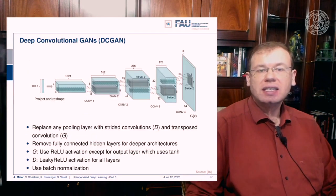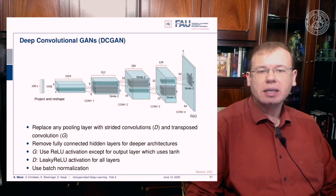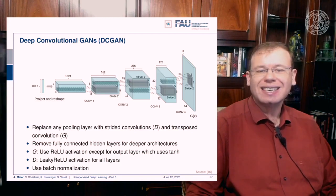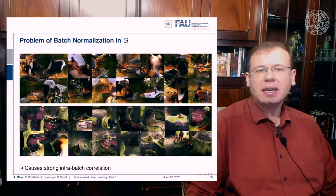You can also work with deep convolutional GANs (DC GANs), where you implement a deep learning approach into the generator. You replace pooling layers with strided convolutions and transposed convolutions, and fully remove the fully connected hidden layers for deeper architectures. The generator typically uses ReLU activations except for the output layer, which uses tanh. The discriminator uses leaky ReLU activations for all layers, and they use batch normalization — but this can lead to a problem.